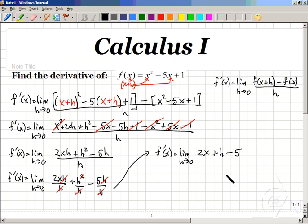At the very end, we'll evaluate the limit by realizing if h goes to 0, this term will become 0. So f prime of x is equal to 2x plus 0 minus 5. Simplifying our final answer, the derivative f prime of x is equal to 2x minus 5.